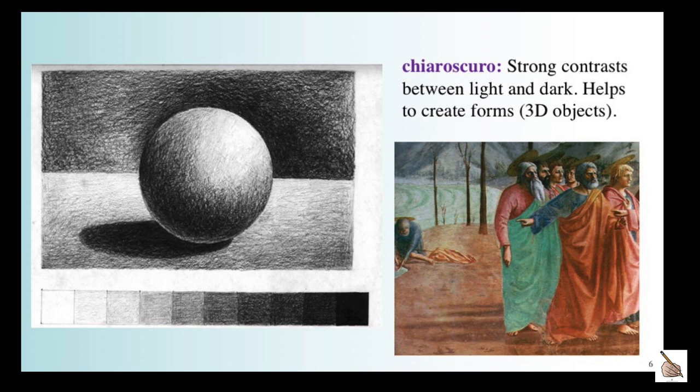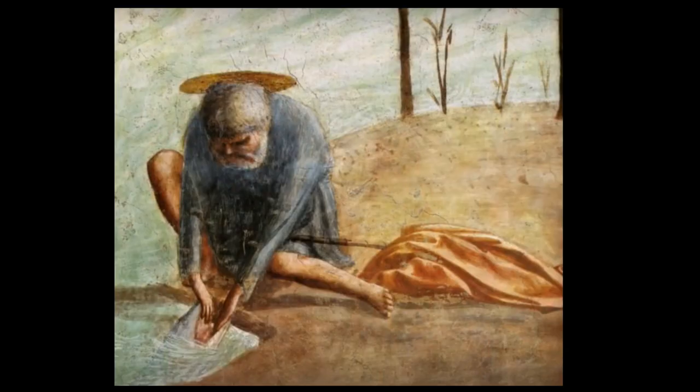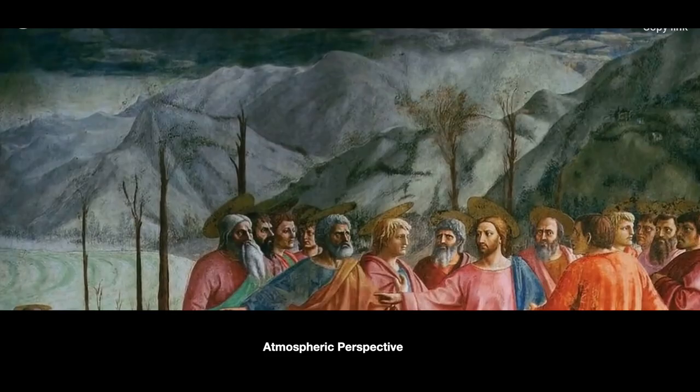The single light source is used to create a more realistic picture and also allows for modeling the human figure to give the figures more weight. Here's a close-up of the scene of Peter collecting the coin from the fish's mouth. Atmospheric perspective was used in the background where you see the clouds, sky, and mountains, creating a deep illusion of space.